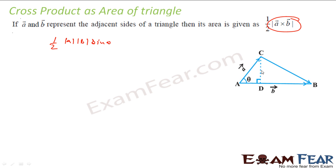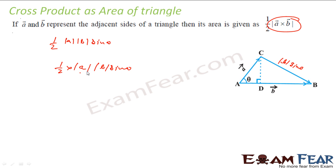If this is my A vector and this is B vector, then the height BC will be B sine theta — I am talking about the magnitude of B. The area of the triangle is ½ times base times height, where base is AC, that is magnitude of A, and height BC is magnitude of B times sine theta. And A·B·sine theta is nothing but |A×B|.